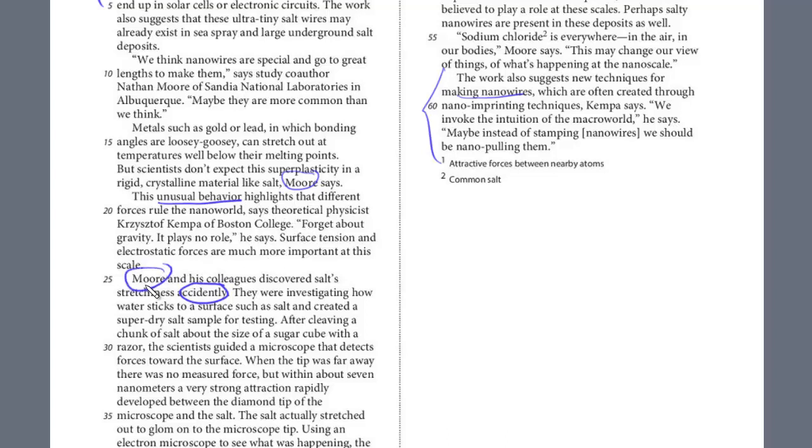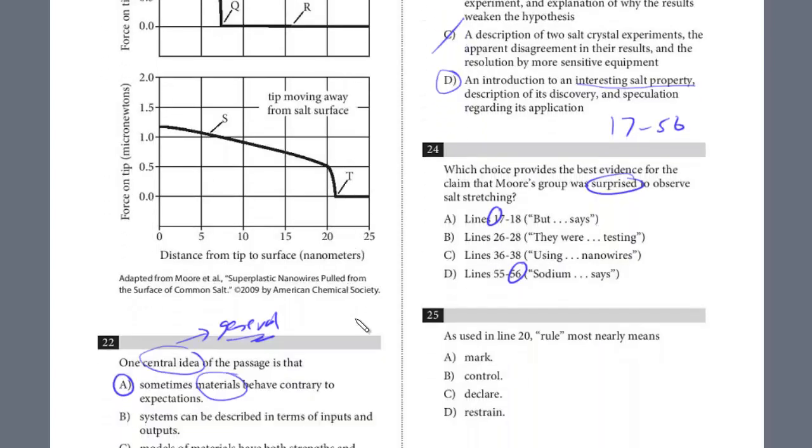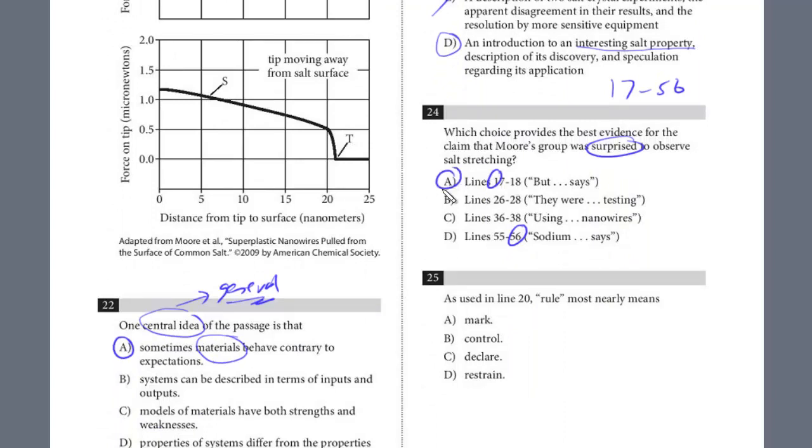Even though Moore appears again in line 25, and it says they discovered it accidentally—this shows how they discovered it. But remember, you have to pay attention to what the question is asking. We want evidence that he was surprised to observe it. Just discovering by accident is not evidence of being surprised. But if they don't expect it, that is surprise. So be careful on those questions. The answer for number 24 is A.